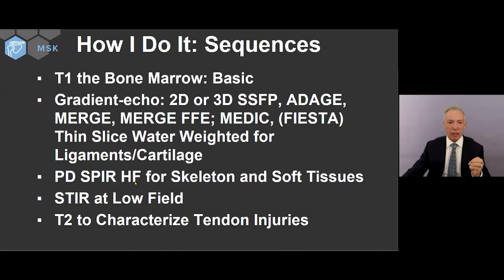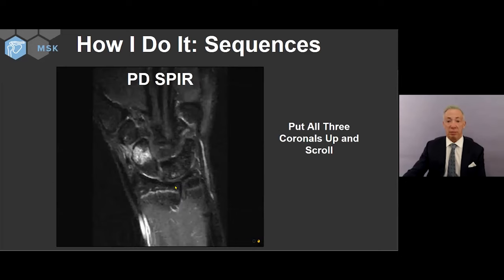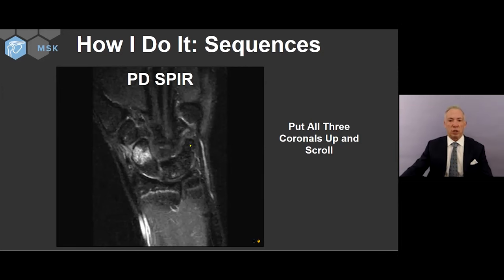At high field, I personally like the proton density spectrally sensitive inversion recovery over T2 fat suppression. Some of my colleagues on the West Coast prefer T2 fat suppression, but I feel I get a little more signal with this sequence. I always have this as part of my workhorse sequence for any joint. At low field, I'll use short time inversion recovery, or STIR, and then T2 to characterize and date tendon injuries — acute, subacute, chronic remote, and so on. I put up my coronal sequences first, focusing initially on the heavily water-weighted sequence — the proton density fat suppression — looking for hot spots. That makes it particularly easy, quick, and pragmatic to interpret.